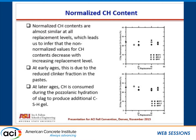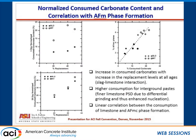Plotting the normalized CH content: calcium hydroxide is consumed by the pozzolanic reaction of slag to form CSH. When we plot the normalized CH content, we can see that values are quite similar across mixes, which leads us to infer that the non-normalized CH values are much lower for the higher replacement levels. This tells us there is an increased amount of reactivity due to the presence of slag. We also find the consumed carbonate content — limestone reacts to form monocarbo-aluminates — and the consumption of carbonate increases with replacement level at both 3 days and 28 days. At early ages this is due to the slag-limestone interaction, and at later ages limestone continues to react.